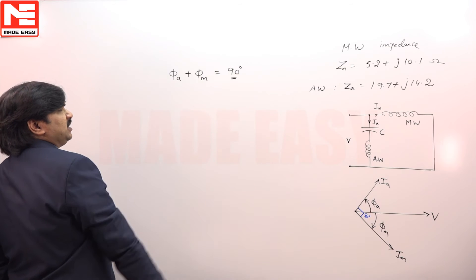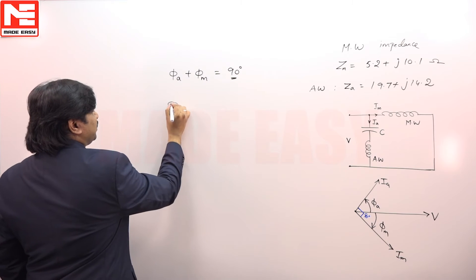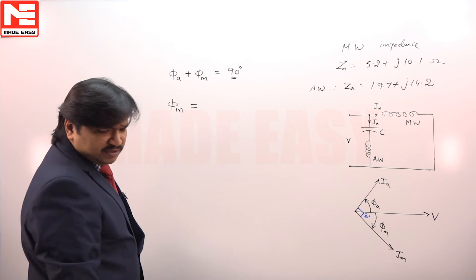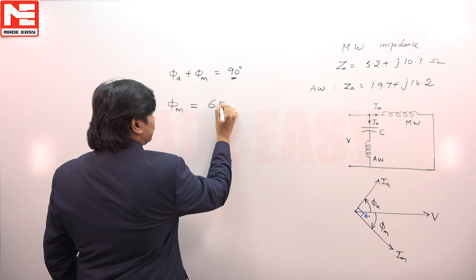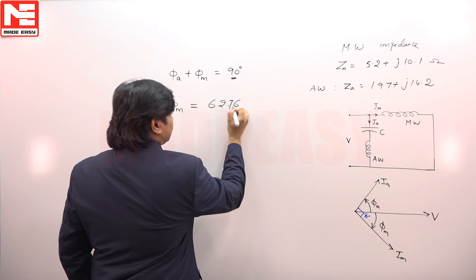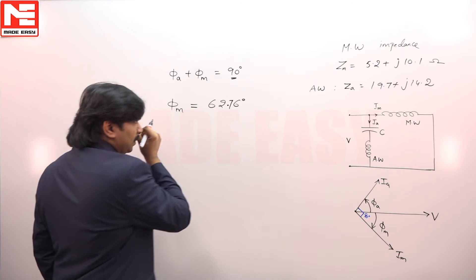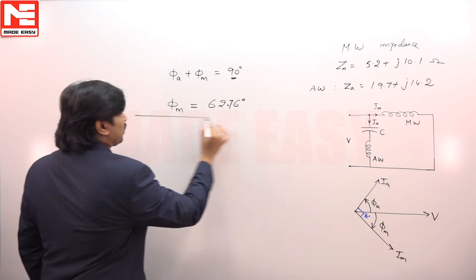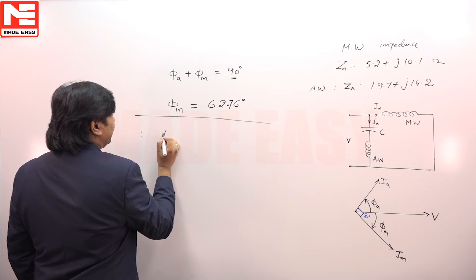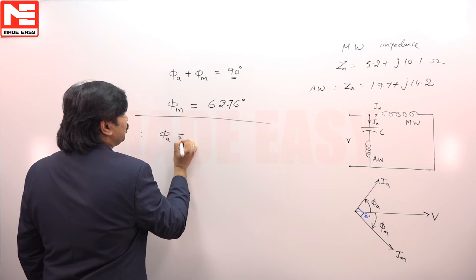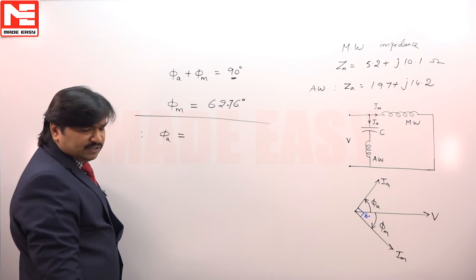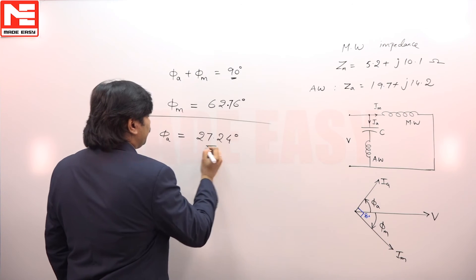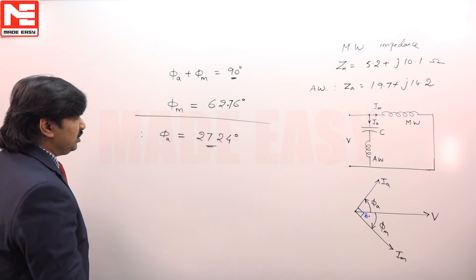From the impedance Z_m given, phi_m is already 62.76 degrees. Then phi_a should be the remaining 27.24 degrees.